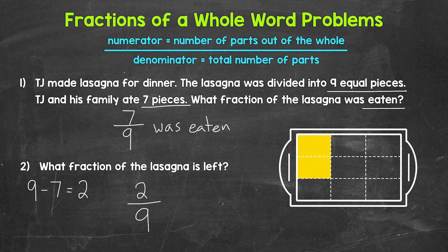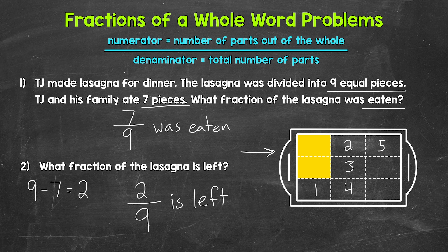Two ninths of the lasagna is left. We have a visual here of this situation. There are nine total pieces, with seven pieces that were eaten, and then two pieces left. The seven pieces that were eaten plus the two pieces that are left equal the nine total pieces — the whole lasagna.